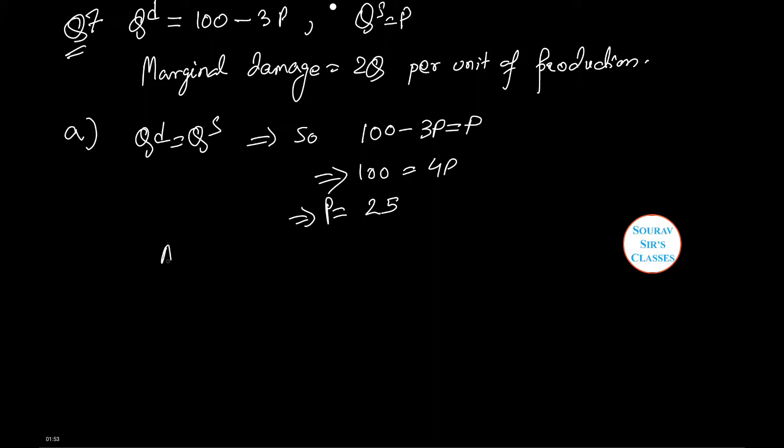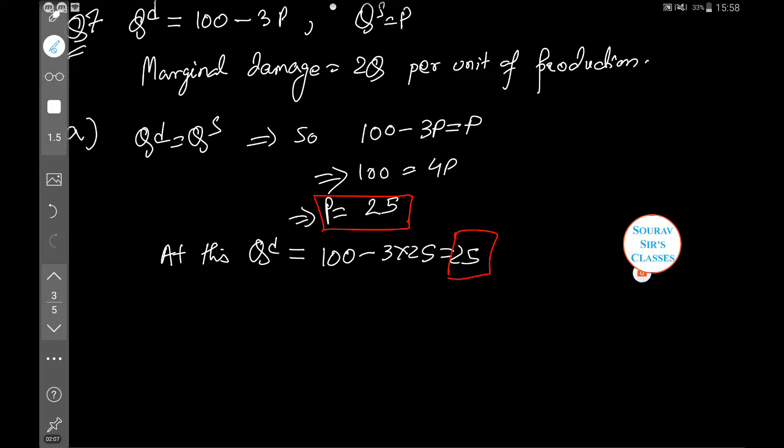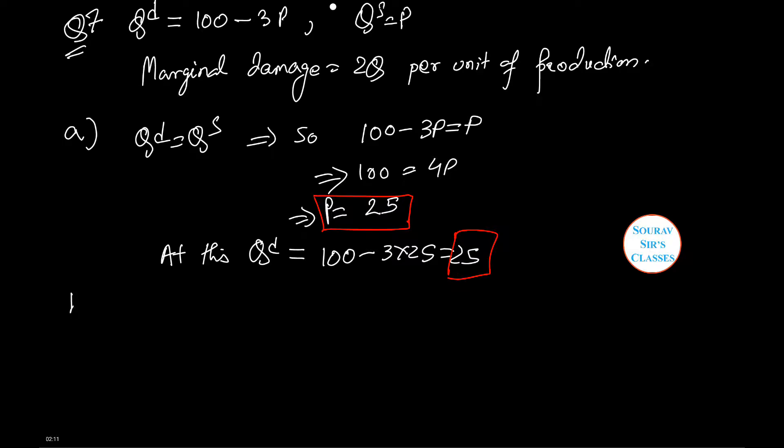At this, QD equals 100 minus 3 times 25 equals 25. So, the price and quantity demanded are both 25.